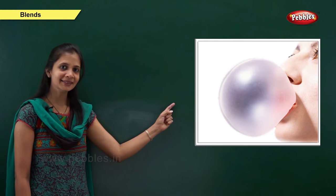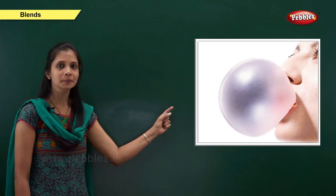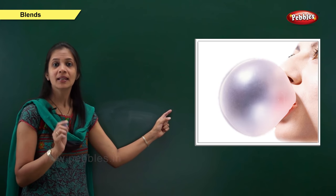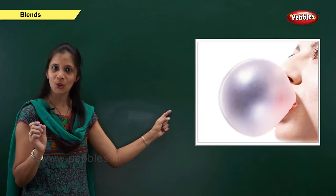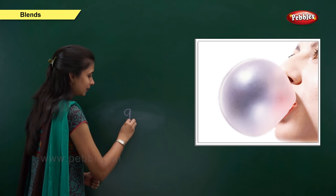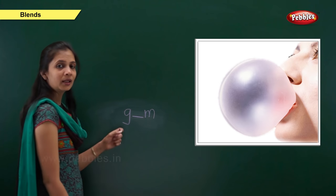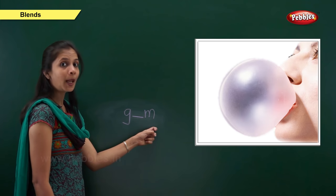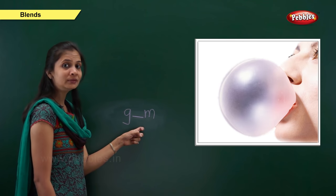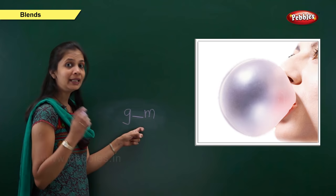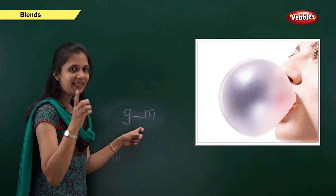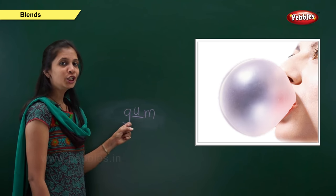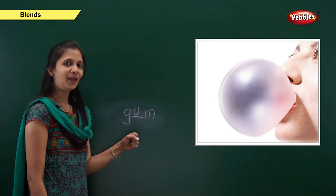Next one. Now, what is it? Yes, this is gum. What is the sound of this word? It is ga, a, ma. When the beginning sound is 'ga', the letter is g. When the ending sound is 'ma', the letter is m. What about the middle sound? It is 'a'. The vowel is u. So: g, u, m — gum.